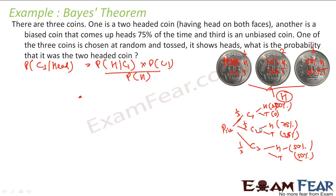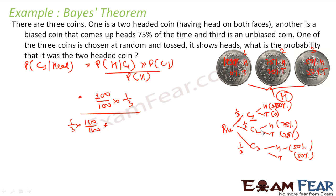P(head | C1): if C1 is taken, probability of head is 100/100 = 1. Probability of selecting C1 is 1/3. Divided by P(head): three paths — path 1: 1/3 × 100/100; path 2: 1/3 × 75/100; path 3: 1/3 × 50/100. Add all three. Solving this gives 4/9 — that is your answer.